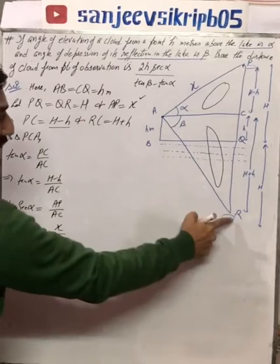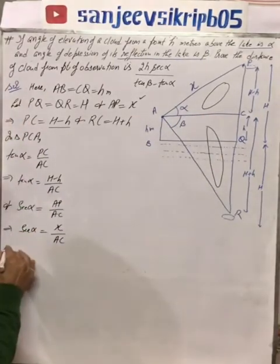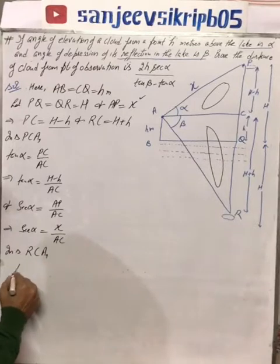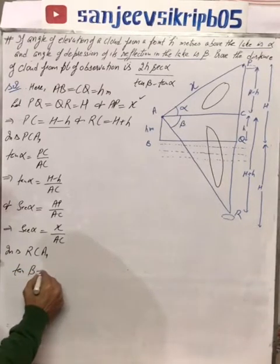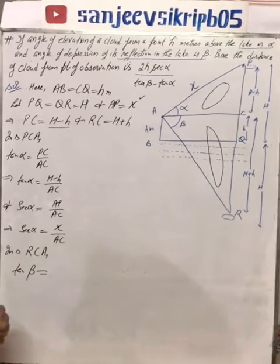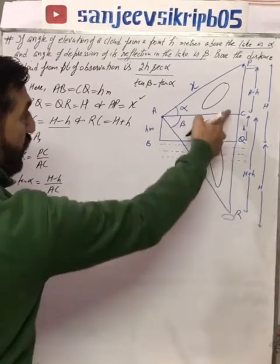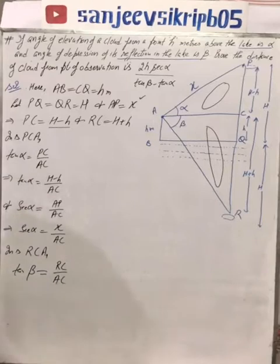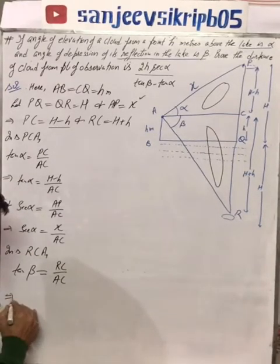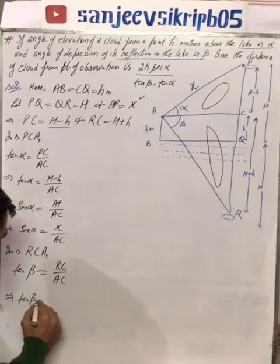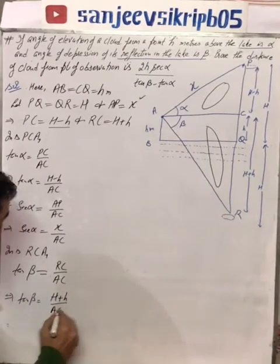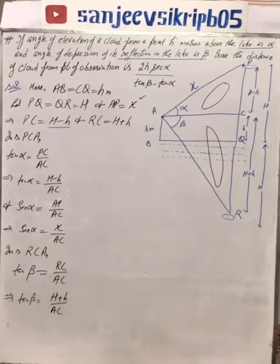In triangle RCA, we apply angle beta. Tan beta equals perpendicular over base, which is RC over AC, that is (H plus h) over AC. AC remains as is.